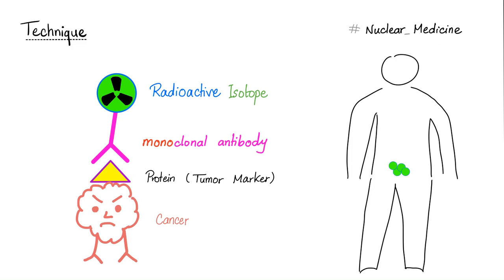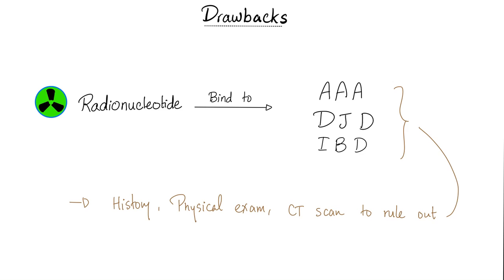Does it have side effects? Anything has side effects. As Dr. Thomas Sowell said, there are no solutions in life, there are trade-offs. What are the drawbacks of immunoscintigraphy? These radionuclides or radioactive isotopes can bind in high concentrations to your abdominal aortic aneurysm, inside your osteoarthritis or degenerative joint disease, or inside your inflammatory bowel disease such as Crohn's or ulcerative colitis. So before I do this, I have to rule out these conditions — through history, physical exam, and usually a CT scan before the immunoscintigraphy.